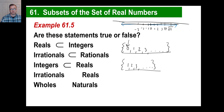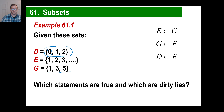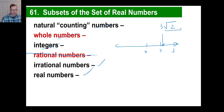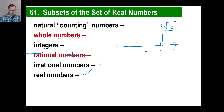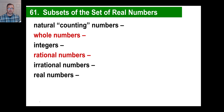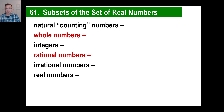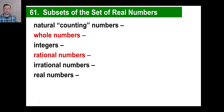What subsets of the real numbers is 11 over 6 a member of? Is it a natural counting number? No. Is it a whole number? No. Is it an integer? No. Is it a rational number? Well, 11 over 6 is a ratio, so yes. Is it irrational? Obviously not if it's rational. Is it a real number — can you stick it on the number line somewhere? Yes, you'd stick it between 1 and 2.